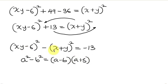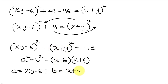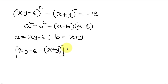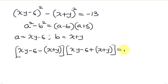Expressing this: a is the expression (xy - 6) and b is (x + y). So (a - b) is (xy - 6) - (x + y), and (a + b) is (xy - 6) + (x + y), and this is equal to -13.